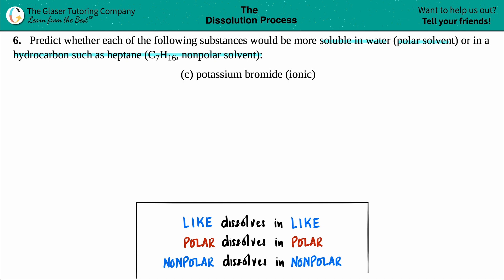Now potassium bromide, they told us, was ionic. Would an ionic solute be more soluble, that just means that it would dissolve more. So if you're soluble, that means you're going to dissolve into your ions, basically potassium and bromine, right?